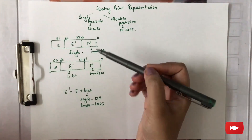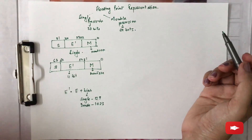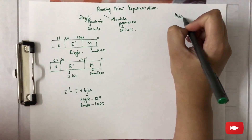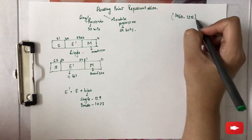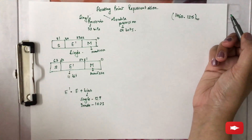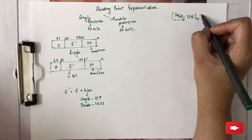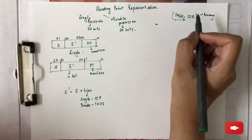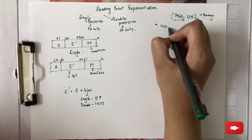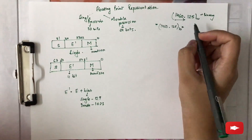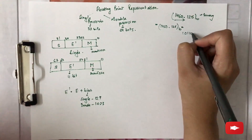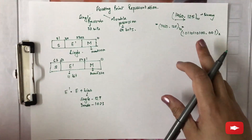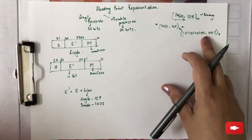Let's represent both single and double precision using an example. Let's take the decimal number 1460.125 and represent it in both formats. First, you need to convert this number to binary format. When you solve this, you will get 1460.125 as 10110110100.001 in binary. You can verify this conversion yourselves.